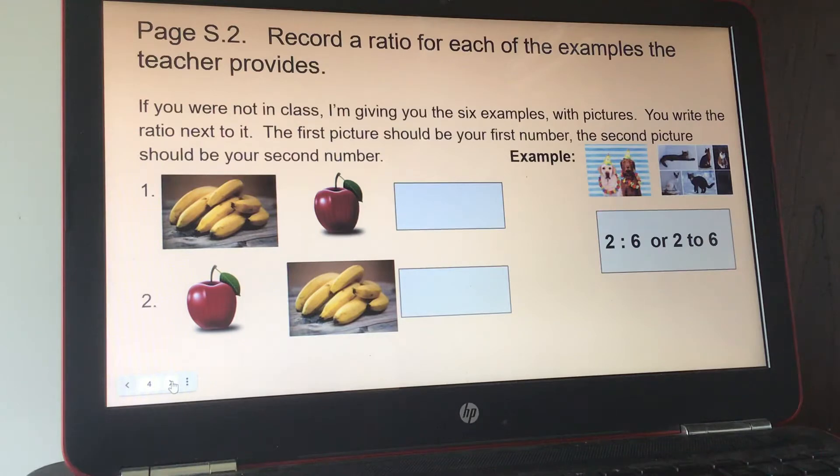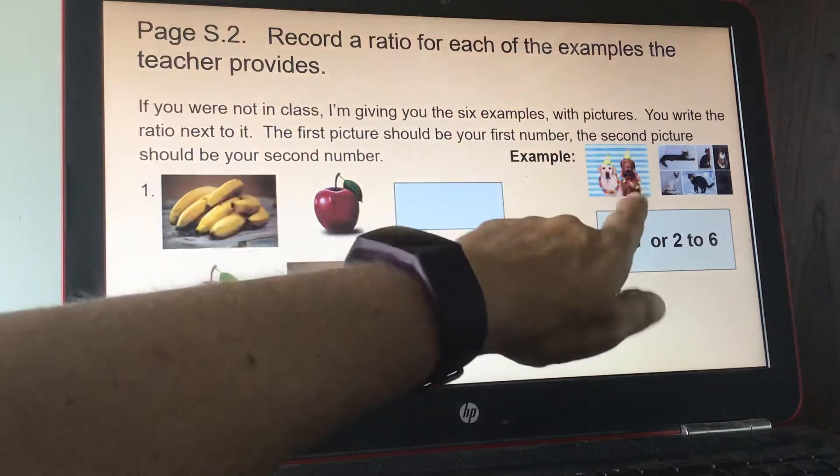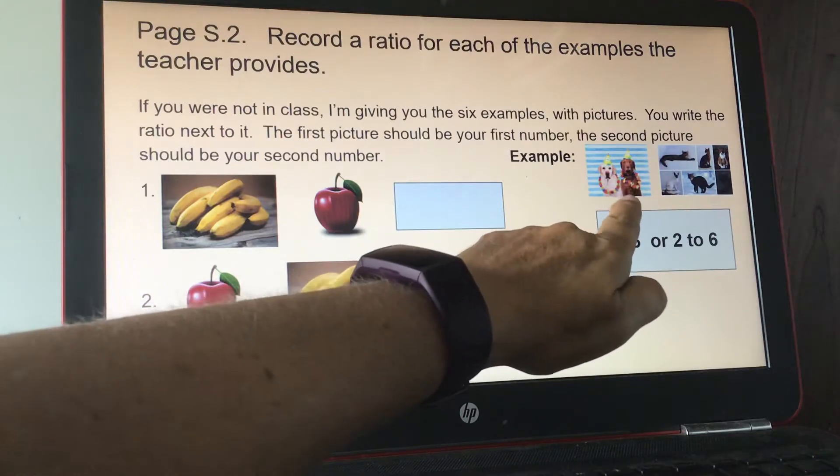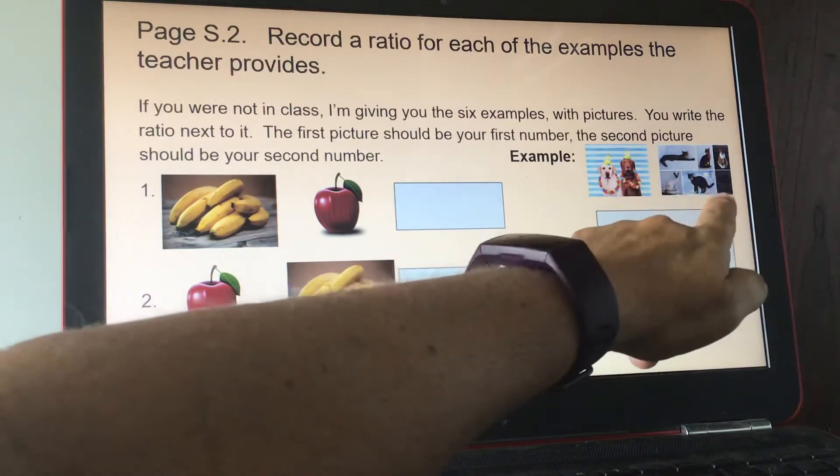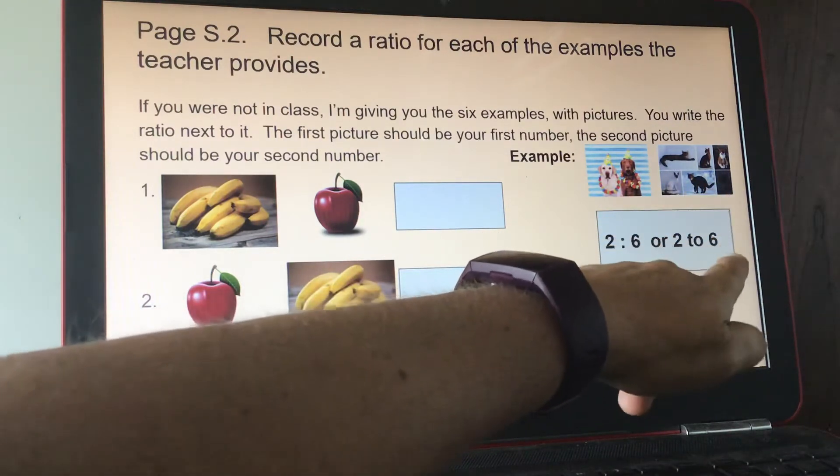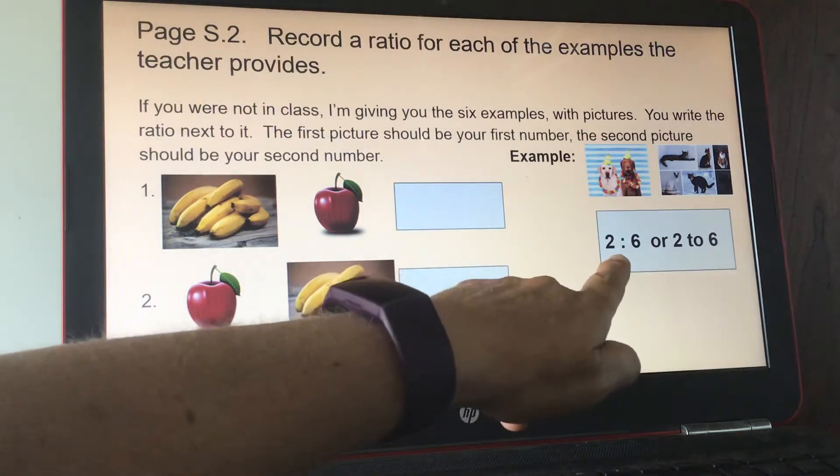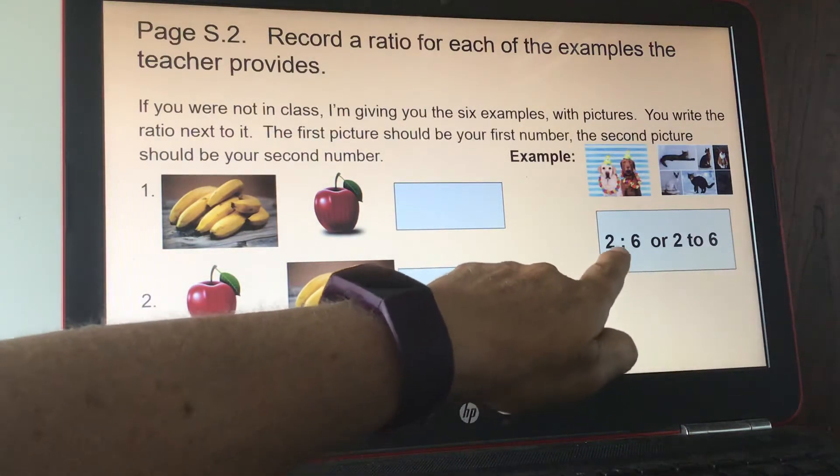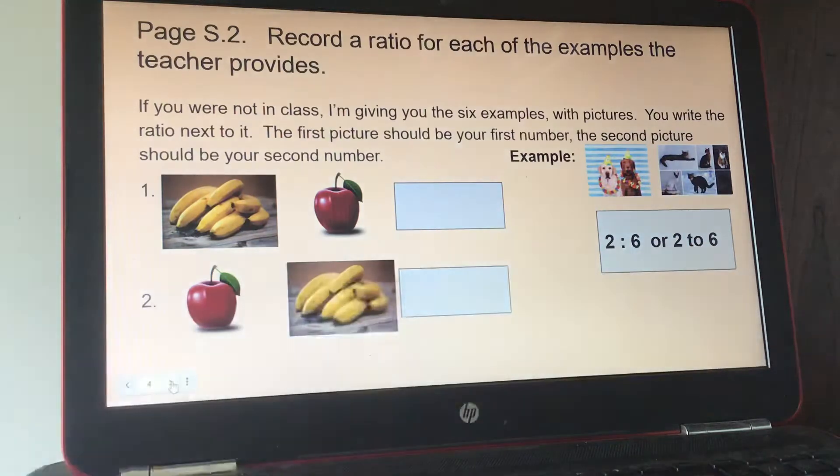Okay, this is page S2. Record a ratio for each of the following examples the teacher provides. So if you were not in class, I just made pictures for you to help you do your ratio. For example, this one, you have 2 dogs, how many cats, and it's 6 cats. So you can write it this way or this way. 2 to 6 or 2 to 6.